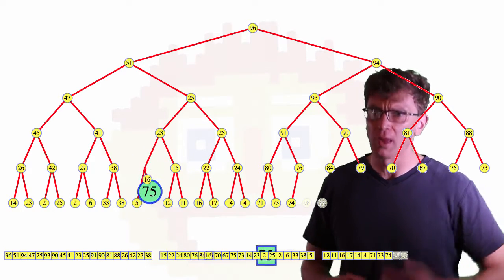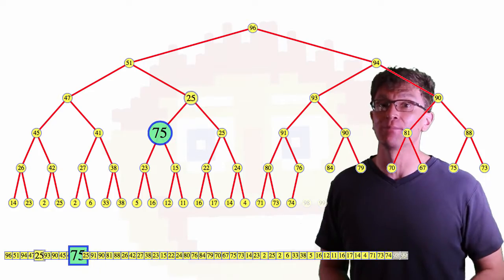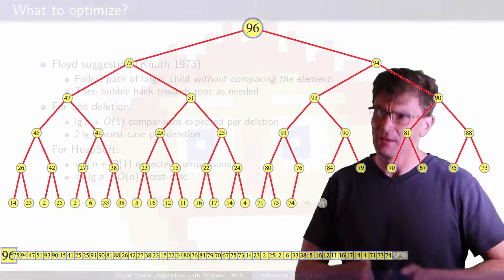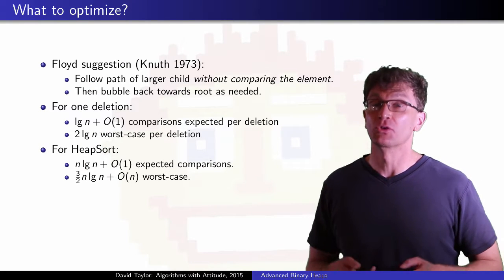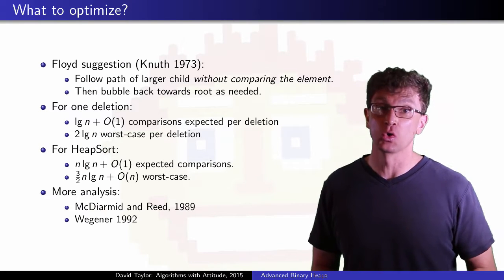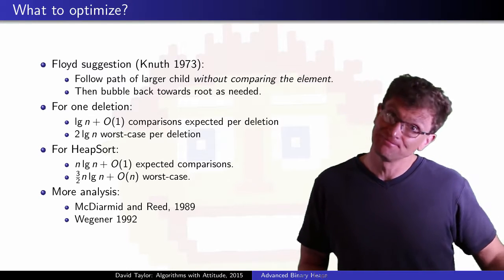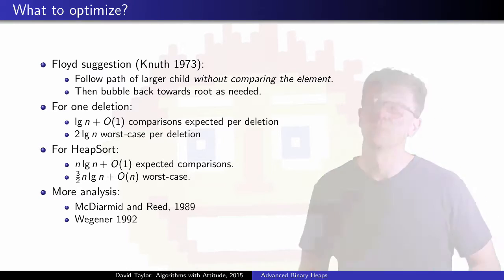if you run this over and over, it can't take more than something like 3 halves log n on average per deletion, or 3 halves n log n total comparisons for heapsort, plus the linear number overall.